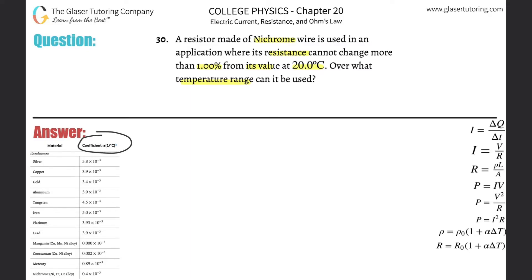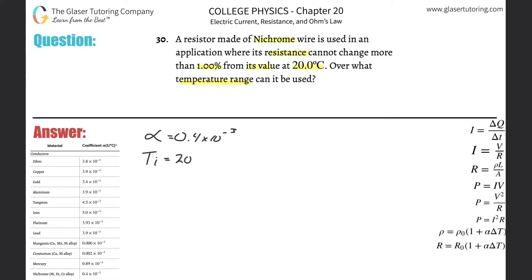We're going to need the alpha value for nichrome — check out number 29 for that discussion. Nichrome's alpha value is 0.4 times 10 to the minus 3. Next, I'm dealing with initial and final values. The initial temperature is 20 degrees Celsius.